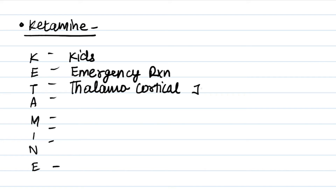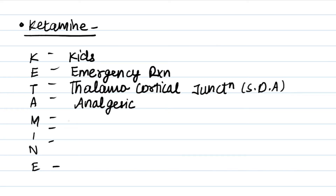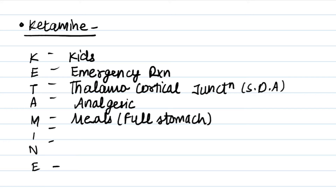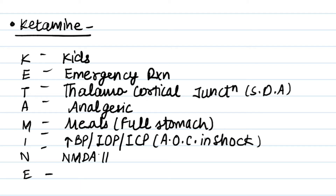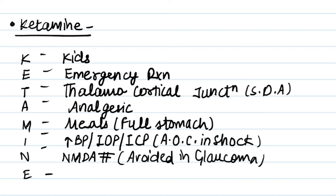Continuing the KETAMINE mnemonic: A for analgesic, M for meals — it can be given with a full stomach, I for increased blood pressure, intraocular pressure, and intracranial pressure. It is the agent of choice in shock. N means NMDA blocker — it is an NMDA blocker. It is avoided in glaucoma. E means excellent bronchodilator — ketamine is an excellent bronchodilator.